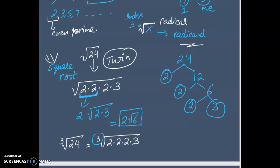Understand it, because the index is 3, instead of twins, we are looking for triplet, if that makes sense to you. That means 3 of the same kind. When the 3 of the same kind are there, they can escape from the radical. So what is left? 2 radical 3. Happy chappy. That is what we are looking for.